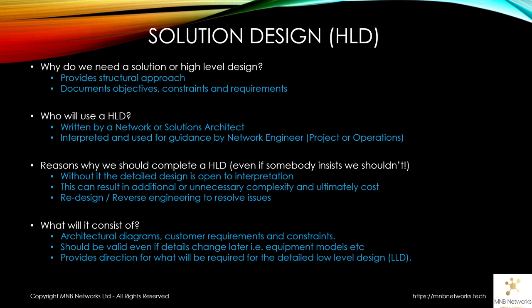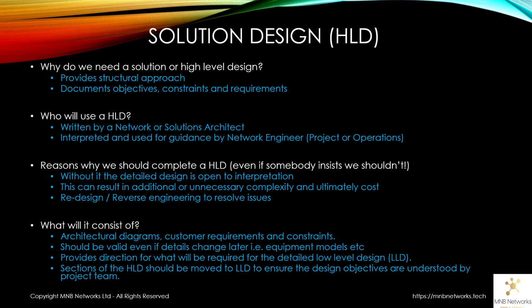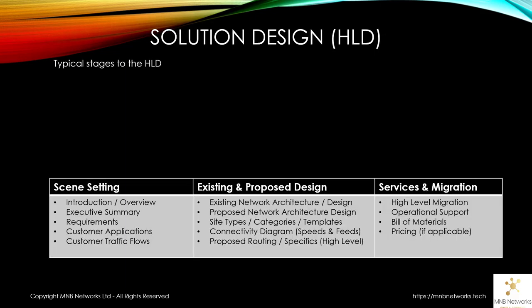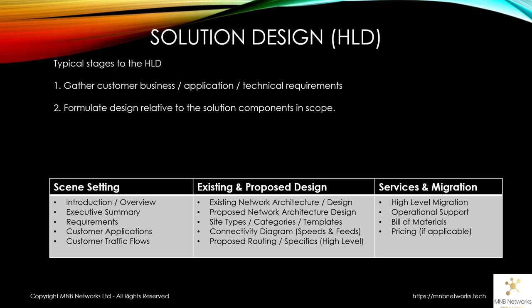It provides direction on what will be required for the low level design, and sections of the HLD should be moved to the low level design to ensure that design objectives are understood and met by the project team. There are a few different stages to the high level design process. We have a requirements gathering stage covering business, application, and technical requirements from the customer. We then formulate the design relative to the solution and components in scope, and highlight the impact on other services or segments of the network. For example, we might only be upgrading the firewall or edge WAN routers, but it might impact the entire data center, and there may be concurrent projects running at the same time.